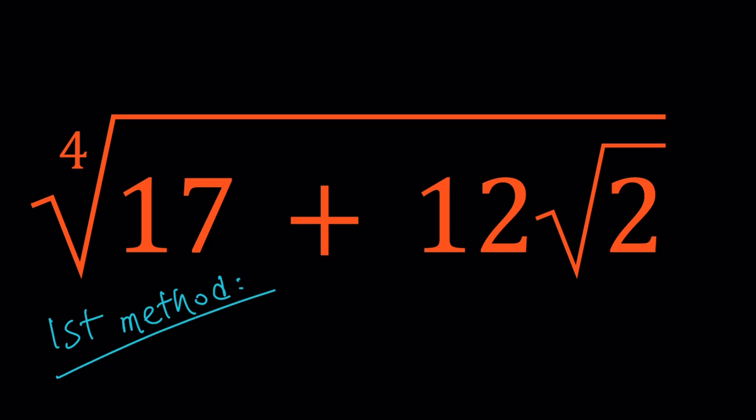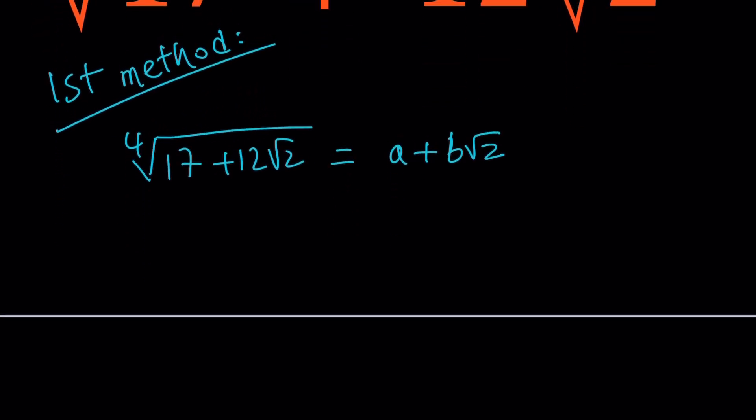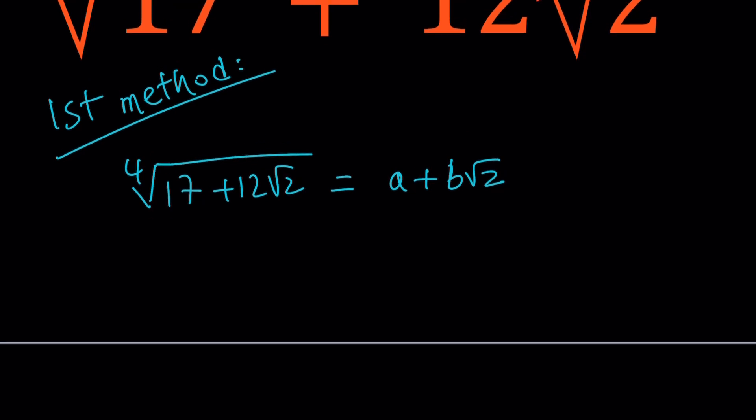So for my first method, I'm going to set this expression equal to something like a plus b root 2, where a and b are positive integers. The idea is, since this is something that looks like x plus y root 2, its fourth root must also be something of the same type, right? So let's go ahead and raise both sides to the fourth power.